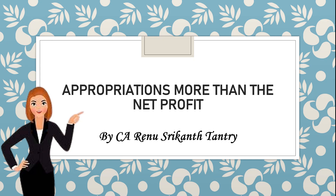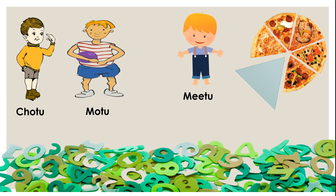Before we jump into the question, let's have a small story. Mitu is a very sweet boy and he had a lot of pizzas ordered at home, so he wanted to share with his friends. He went out and invited his two friends, Chotu and Motu, home. Chotu said he could eat four slices and Motu said he could eat six slices. Mitu said they had a lot of pizzas, so please come over, and he took them home. When they reached home, they found only five slices were left.